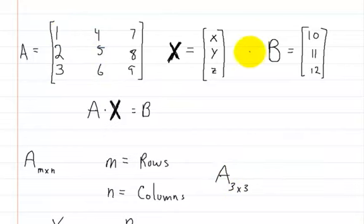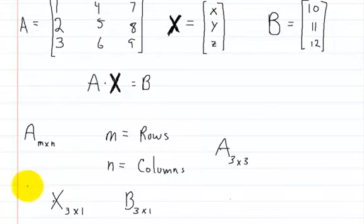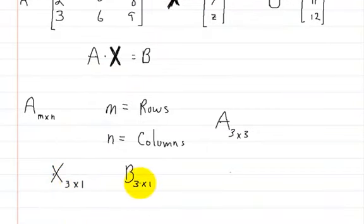What kind of matrix do you think X is? Try to figure out what X is and what B is. They're the same thing. If you paused it, great. Now I'll continue. Here is matrix X. It has 1, 2, and 3 rows and just 1 column. So matrix X and matrix B are actually 3 by 1 matrices.